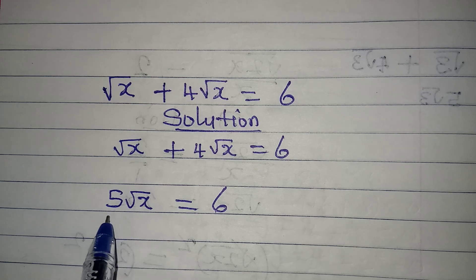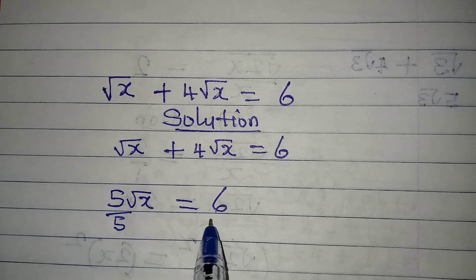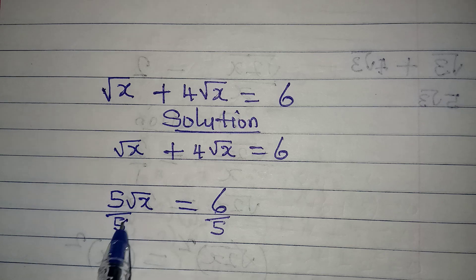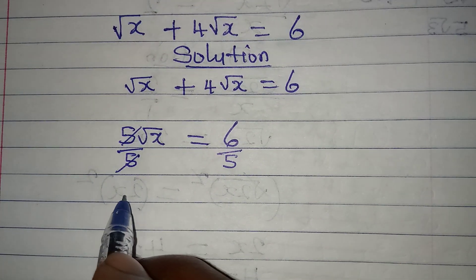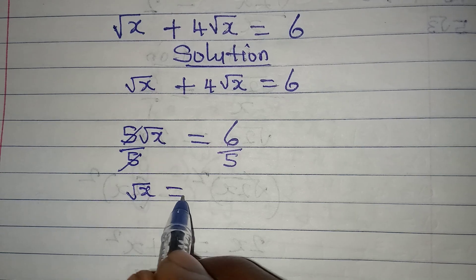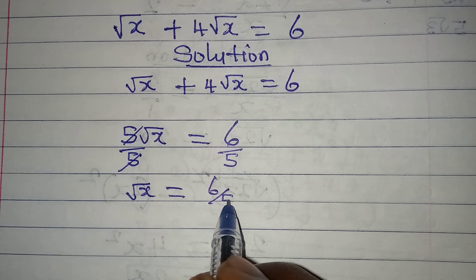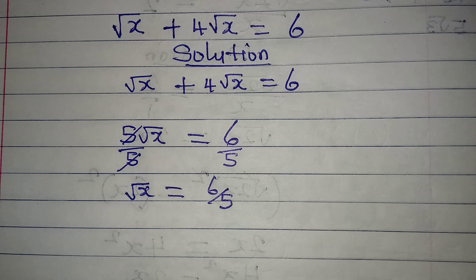We divide this by five and divide this by five. This cancels this, and now you can see that square root of x is equal to six over five.